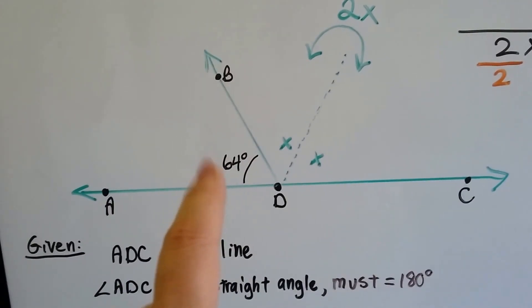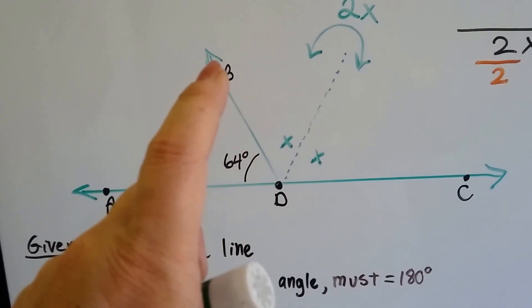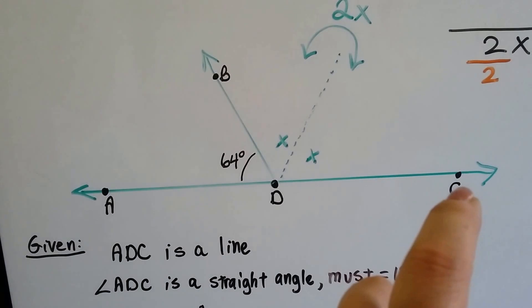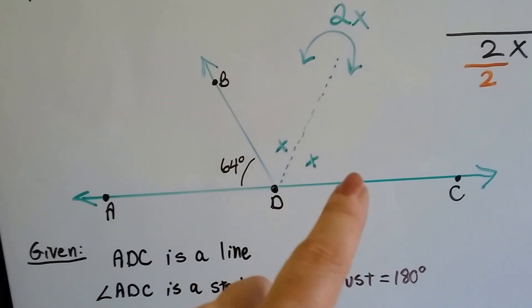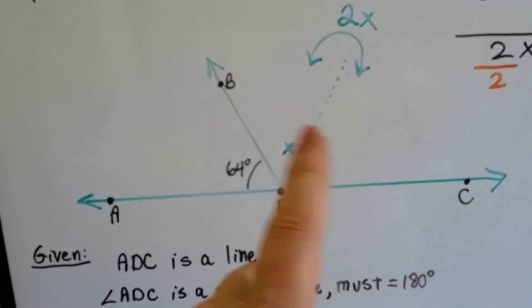And we've got angle B, D, C, which is 2X. It's an X and an X. So it's 2X.